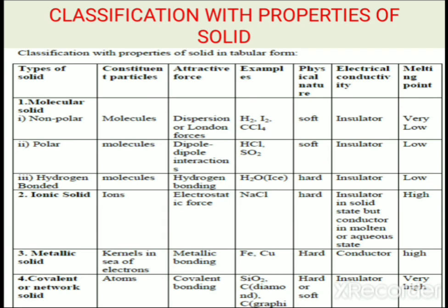Reviewing the classification with properties: in nonpolar, polar, and hydrogen bonded molecular solids, the constituent particles are molecules. In ionic solids, the constituent particles are ions. In metallic solids, the constituent particles are kernels in a sea of electrons, primarily mobile electrons. In covalent or network solids, the constituent particles are atoms.